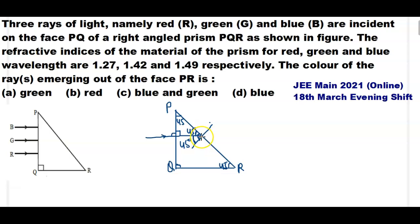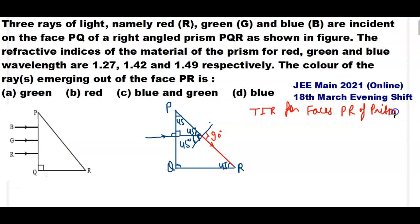If the reflected ray is grazing along surface PR, the angle of reflection is 90 degrees. The condition for Total Internal Reflection (TIR) at face PR of prism PQR requires that the angle of incidence be greater than the critical angle, and light must be passing from denser medium to rarer medium.